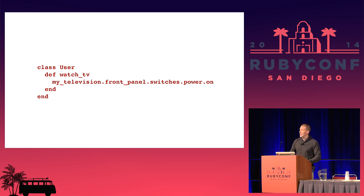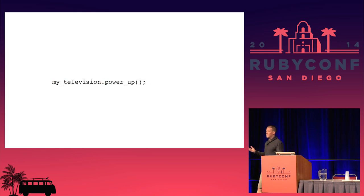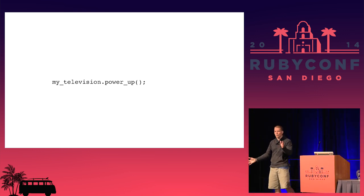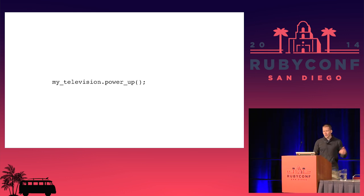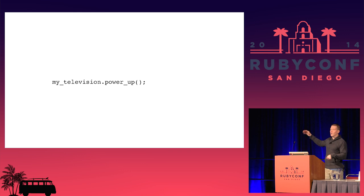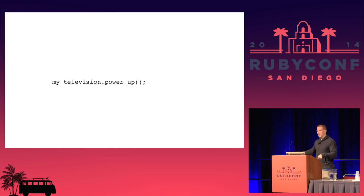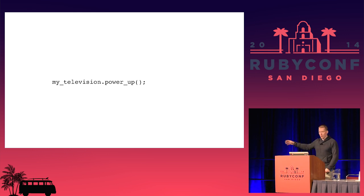So what do you do? Just make a power-up button on the television — command that thing, just start up, I don't care how you do it, just turn on. This method can take care of talking to related objects. The code that uses it only has to know that there's a television and it has a power-up method.